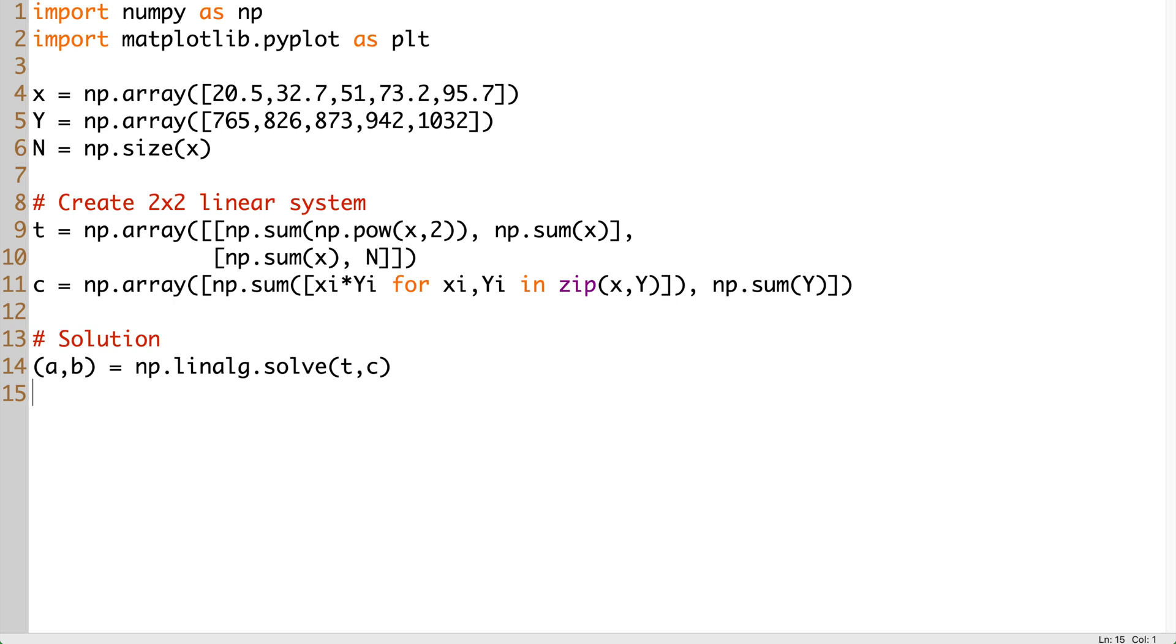Since we expect only two values, we assign the return value from the solve function to a tuple of A and B, and the result is displayed through a formatted print.